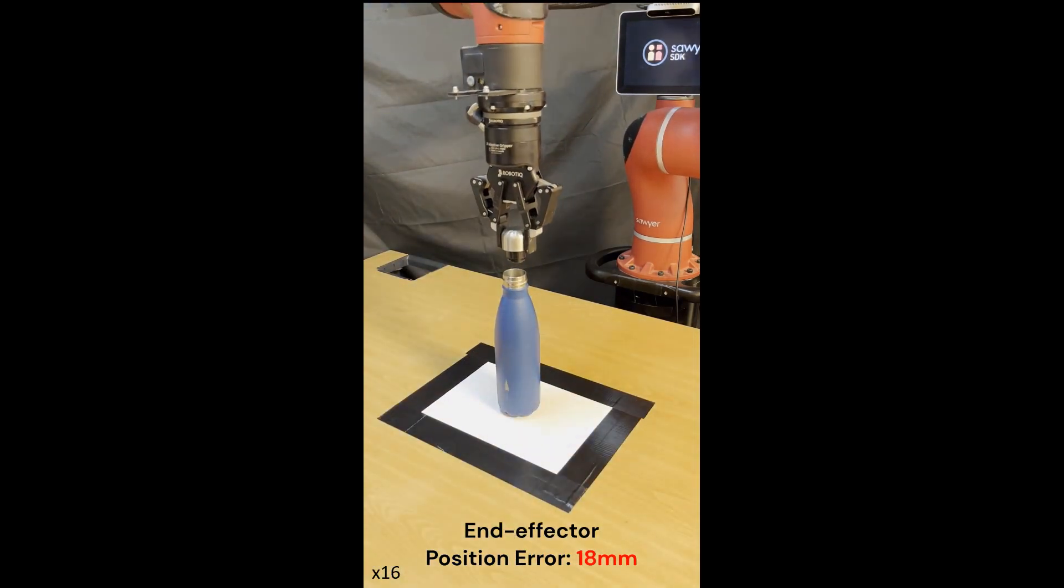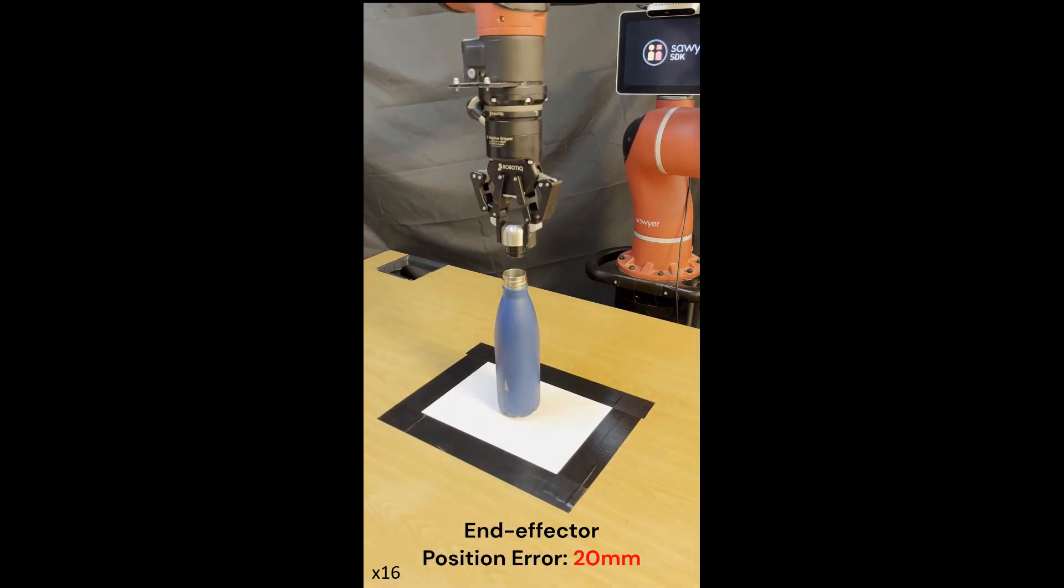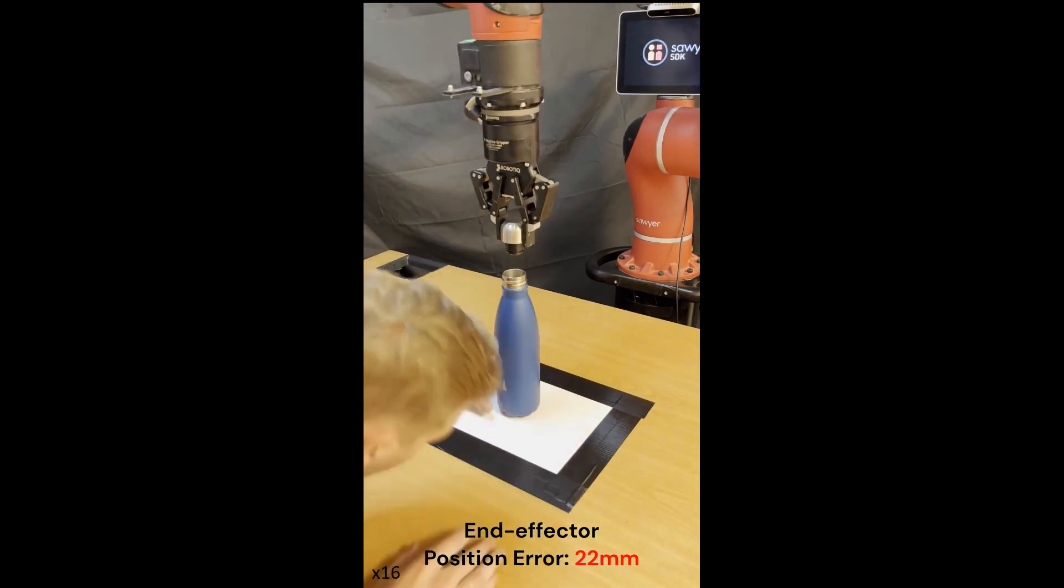Finally, we map these starting end-effector position errors to either calibration or pose estimation errors, using an empirical mapping.